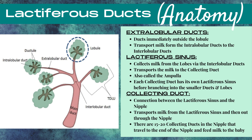Next, let's talk about the collecting duct. The collecting duct is a connection between the lactiferous sinus and the nipple, and it transports milk from the lactiferous sinus out through the nipple. There are 15 to 20 collecting ducts in the nipple. Each collecting duct belongs to a lobe, so one lobe of the breast has multiple lobules, and all those lobules form one ductal system making up one lobe, which ends in a collecting duct attached to the nipple. So 15 to 20 lobes, each with a collecting duct that ends at the nipple.